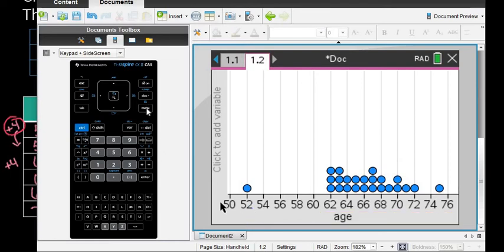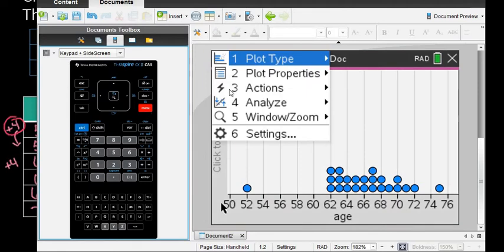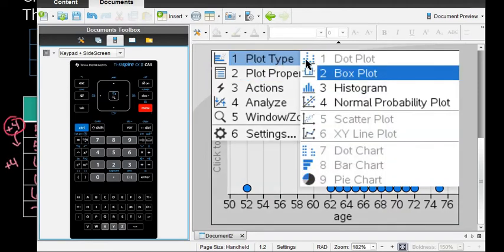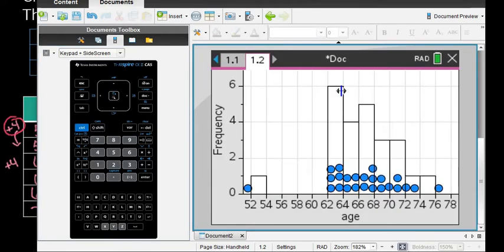But we don't want a dot plot, we want a histogram. So I'll go to menu, plot types, and choose option three, the histogram.